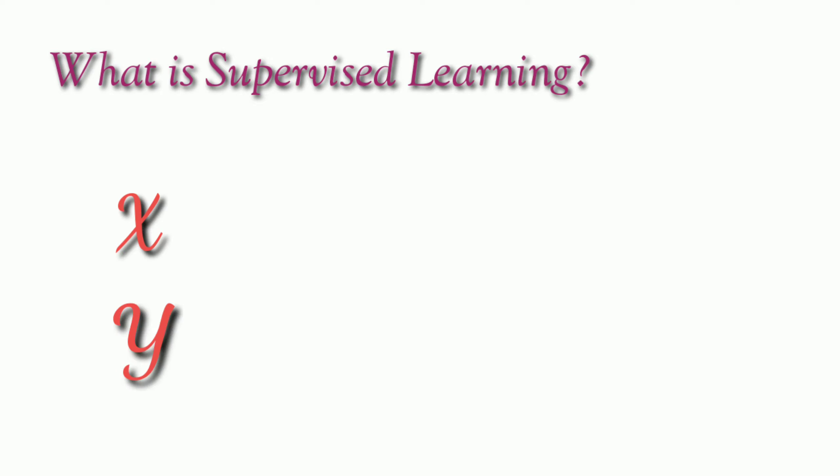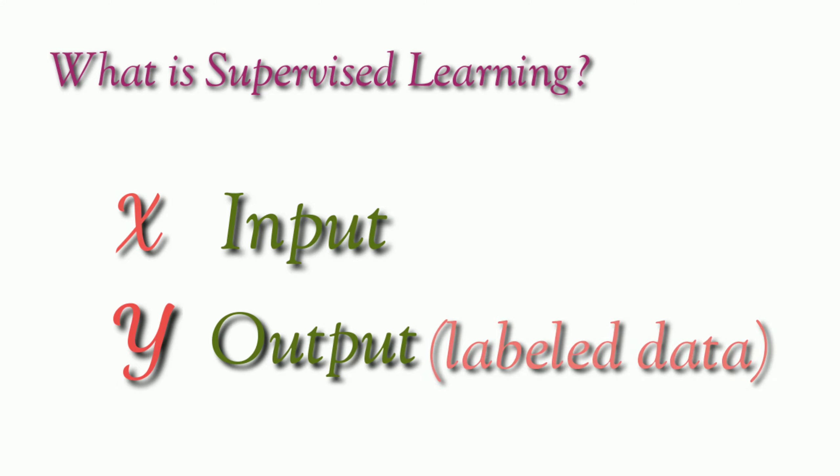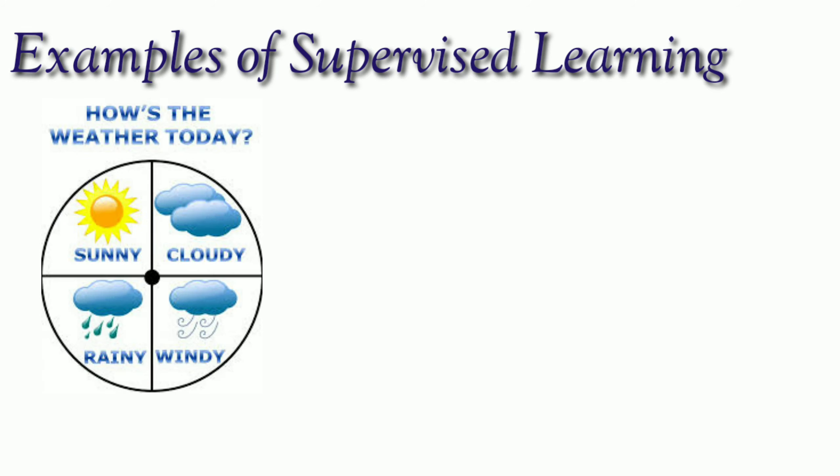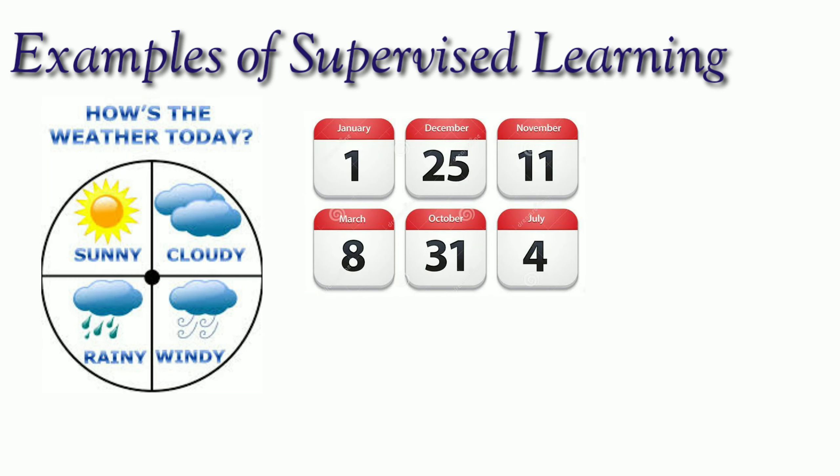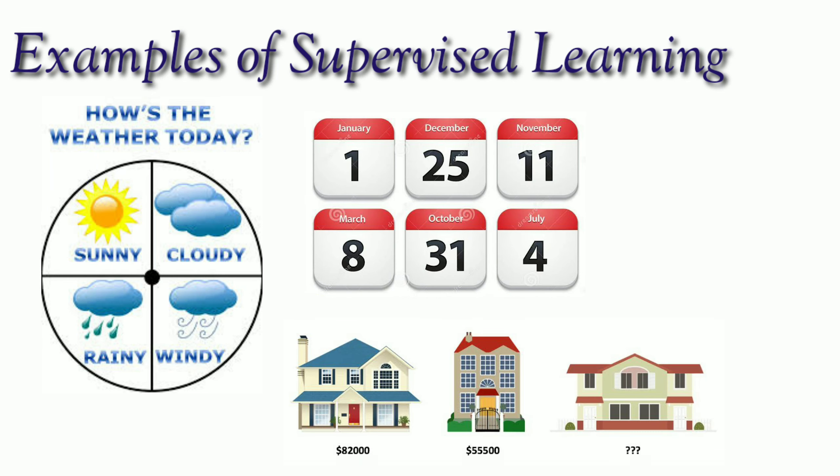Now, what is supervised learning? Supervised learning has two things: X and Y. X will be the input and Y will be the output, that is the labeled data. Examples of supervised learning include finding weather conditions, which time of the day it is, holidays in the month, price of the house.